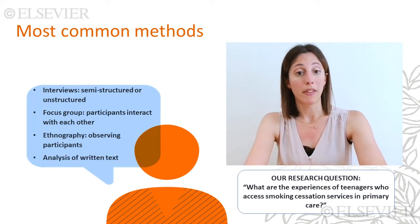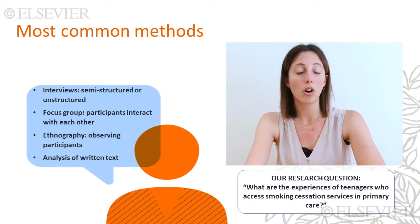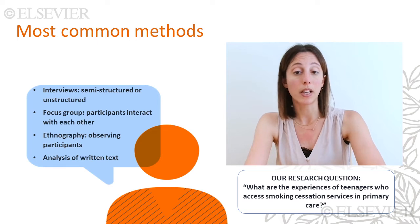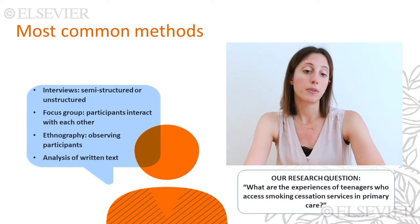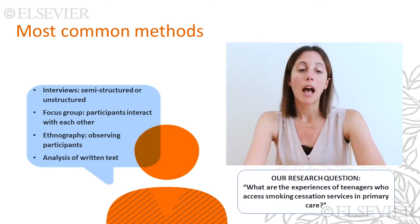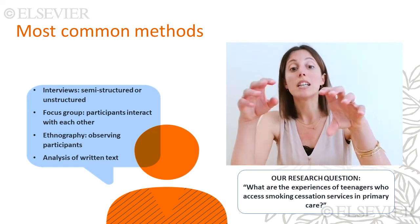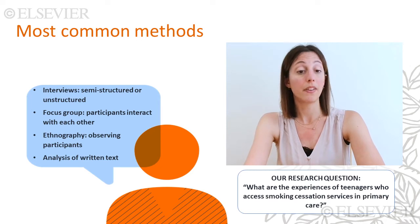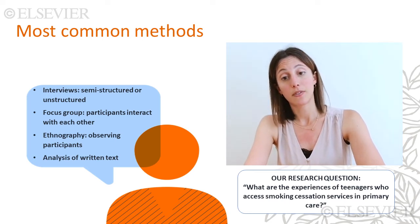Let's recap the most common methods in qualitative research. Interviews are probably the most famous — they can be structured, with a broad list of questions and topics to be covered, with the interviewer steering the participant; or unstructured, where the interviewer does not ask many pre-arranged questions and allows participants to steer the process. Another method is focus groups, where participants are interviewed as a group and data is generated out of interactions between participants rather than just summing up individual responses. Then there is ethnography, where participants are observed in their natural setting to understand their behaviors and beliefs in depth. There is also the analysis of written text, such as diary entries.